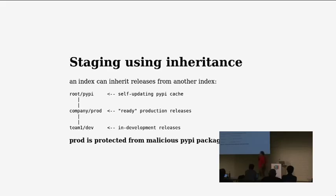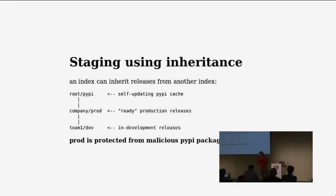If you want to do some kind of QA workflow, you can also have a development index — for example, team-based. That's what some companies are doing. You put your in-development releases that are not ready to be deployed on your web servers, but they can be used for further testing. And one important thing is that your production index is actually somewhat protected from malicious PyPI packages.